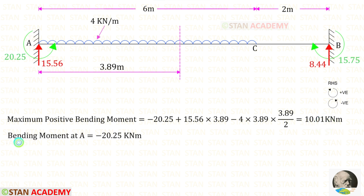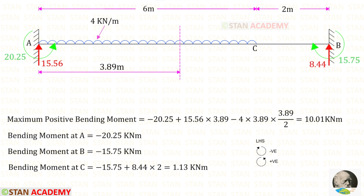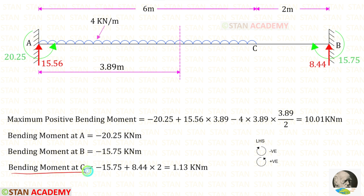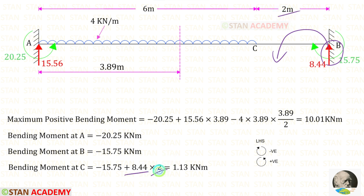At point A, we have moment MA acting in the anti-clockwise direction, so it is negative. To find bending moments at points B and C we use the left-hand side rule as it is easier. At point B, moment MB acts in the clockwise direction, so it is negative. At point C, MB acts in the clockwise direction (negative) while the reaction RB acts in the anti-clockwise direction (positive) at a distance of 2 m. The bending moment at C is 1.13 kNm.